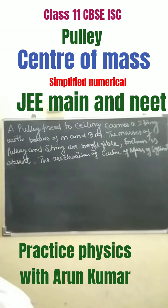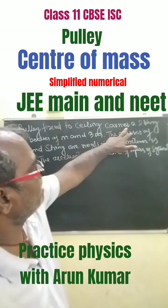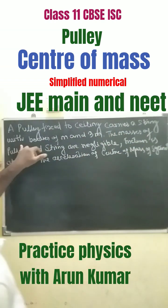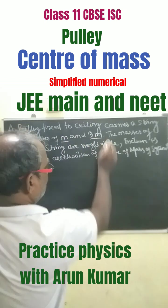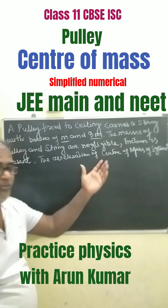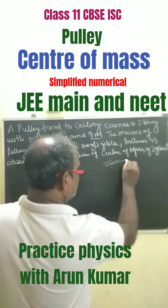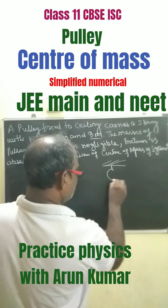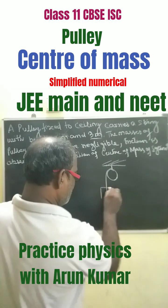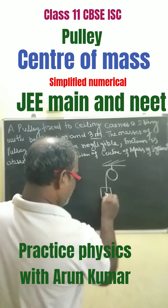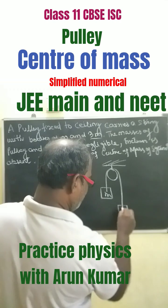The given question is a pulley fixed to a ceiling that carries a string with bodies of mass M and 3M. Let's draw a free body diagram. This is the ceiling and this is a pulley carrying a mass M on one side and a mass 3M on the other.